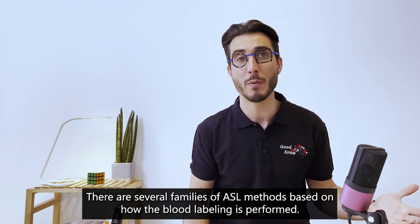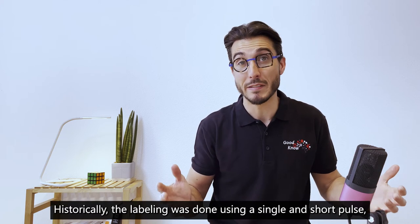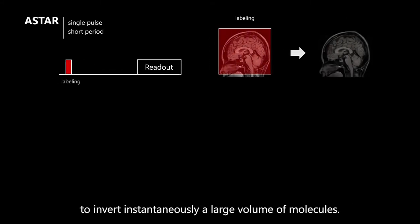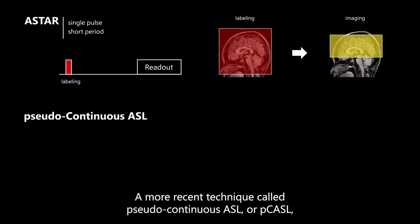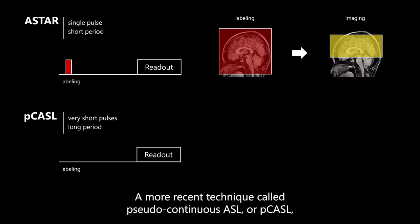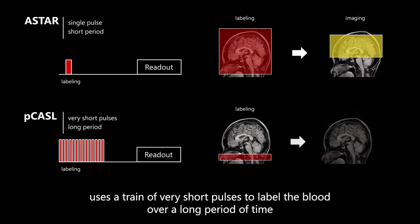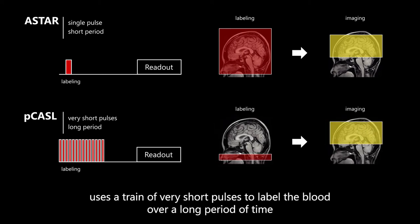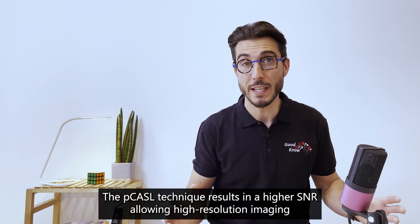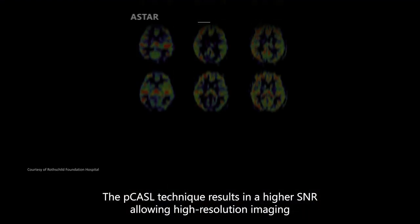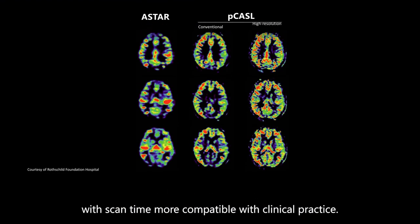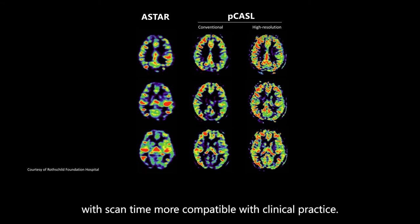Historically, the labeling was done using a single and short pulse to invert instantaneously a large volume of molecules. A more recent technique, called pseudo-continuous ASL or PCASL, uses a train of very short pulses to label the blood over a long period of time. The PCASL technique results in a higher SNR, allowing high resolution imaging with scan time more compatible with clinical practice.